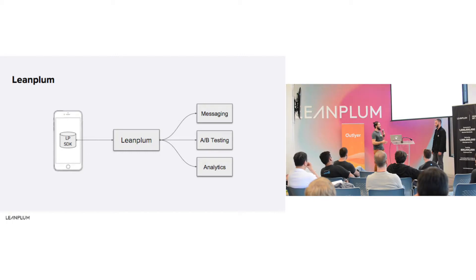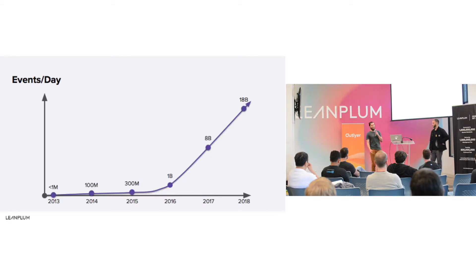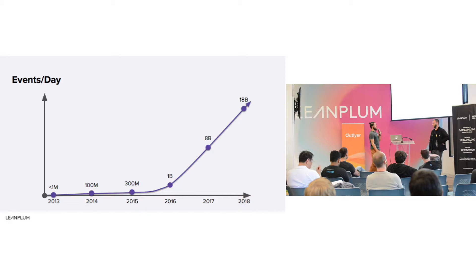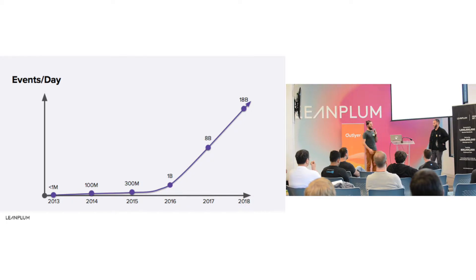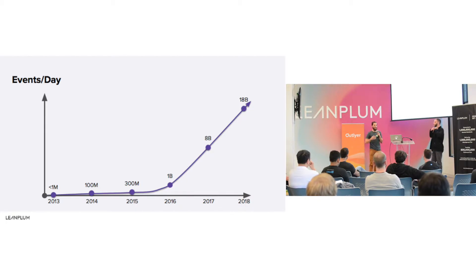When we started, we were built on Google Cloud and still run on Google Cloud, but we were using a lot of managed services. Things just worked out of the box and we didn't need any DevOps or SREs. But as we started growing and getting more customers, our ingest events per day scaled exponentially. Right now we're experiencing about 200,000 events per second.